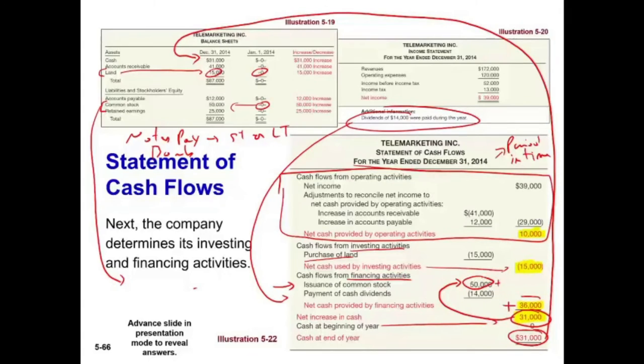Totaling all three sections: $10,000 operating, minus $15,000 investing, plus $36,000 financing equals an increase of $31,000. Beginning cash was $0, so ending cash is $31,000 — which reconciles with the balance sheet. The cash flow statement is correct.